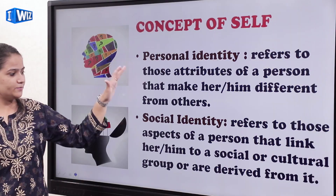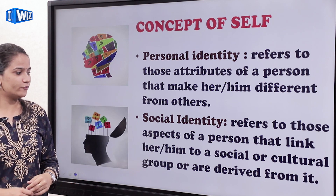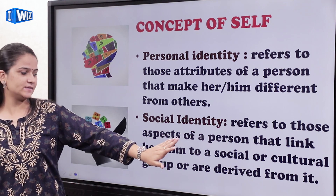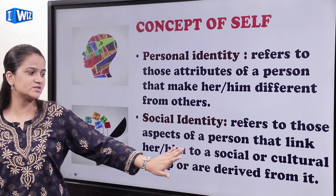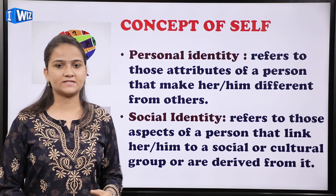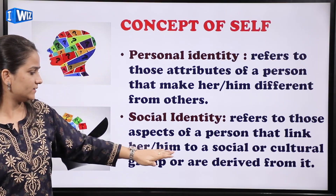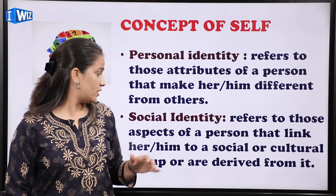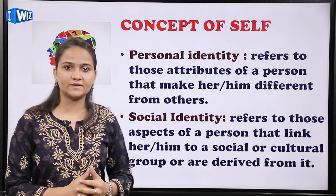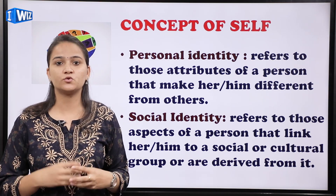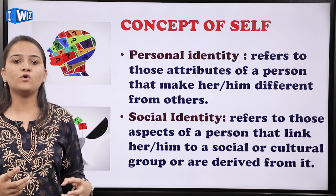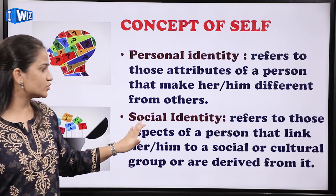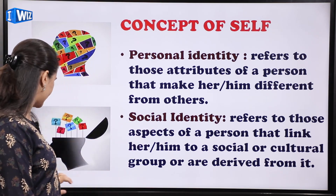अब जो दूसरी identity होती है वो होती है social identity, यानि it refers to those aspects of a person that link her or him to a social or cultural group and are derived from it. यानि ये आपकी social group से affiliation है — जैसे अगर मैं कहूँ कि मैं एक Hindu हूँ, या मैं एक university की student हूँ। इससे आपको पता चलता है कि वो इंसान कौन से social group से affiliated है।